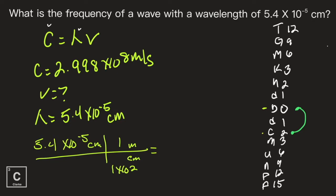I've got 5.4 with a little squatty e — that just means exponent. So I'm going to type in negative 5. No times, no 10, just 5.4 e negative 5. The next number is on bottom, so I'm going to divide by 1 exponent 2, then equals. My calculator gives me 5.4 times 10 to the negative 7, and that is in meters because my centimeters cancel out. Now I have a usable number for the wavelength in meters.